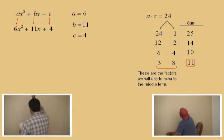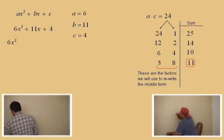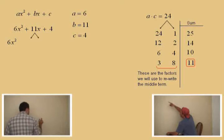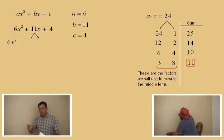So, let's go back to our problem now. 6x squared. And now, what we're going to do is take that plus 11x and rewrite plus 11x using the 3 and the 8. Using the 3 and the 8.